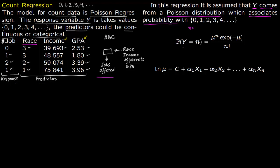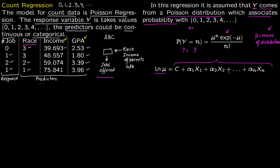Here n is the count. So the probability that y equals 3 means you replace n with 3. Now, mu is the mean of the Poisson distribution. Since this is an exponential distribution — as you can see there is an exponential term — to model it you have to take the log. So the model is: log of mu, that is the log of the mean of the distribution, is equal to a linear regression model.